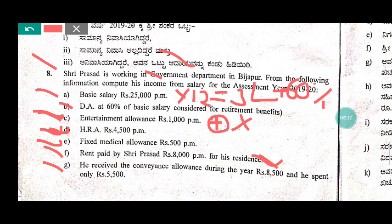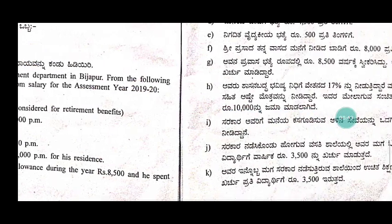He received convenience allowances during the year of rupees 8,500, but he spent only rupees 5,500. So the remaining balance of rupees 3,000 will be taxable. The convenience allowance received from employer is 8,500, out of which only 5,500 was spent, and the remaining balance of 3,000 will be taxable.